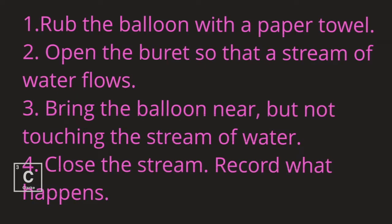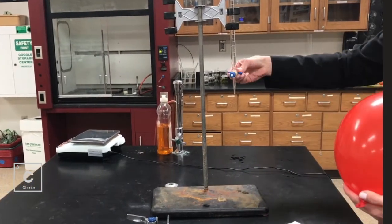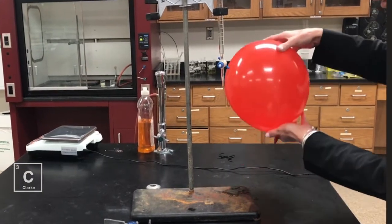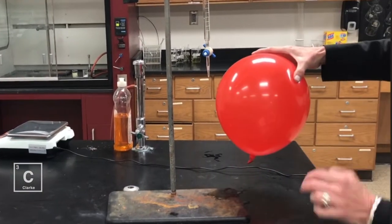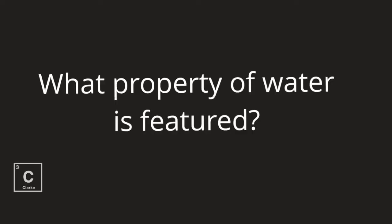Rub the balloon with a paper towel. Open the burette so that a stream of water flows. Y'all, you're supposed to put a beaker under there to catch the water. You will notice that I did not do that. Bring the balloon near, but not touching the stream of water. Record what happens, but make sure you close the stream. What property of water is featured?